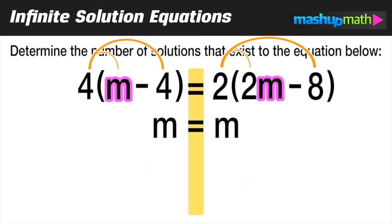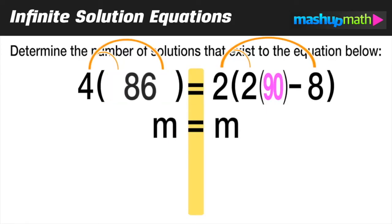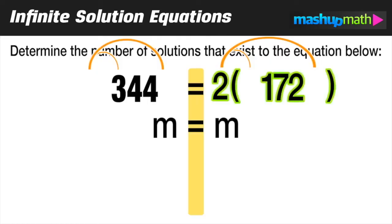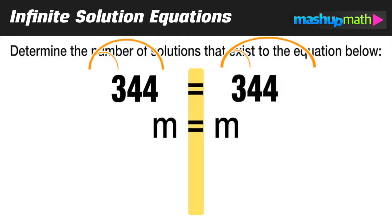For instance, if I replaced m with 90, I'm just picking any random number, any number will work. If I solve the left side in parentheses, 90 minus 4 equals 86, and 4 times 86 is equal to 344. On the right side in parentheses, 2 times 90 minus 8 is equal to 172.